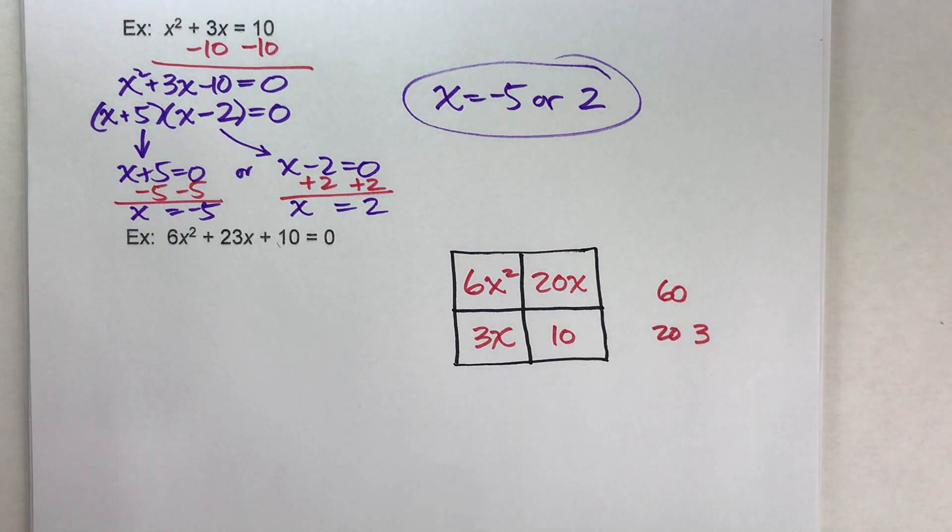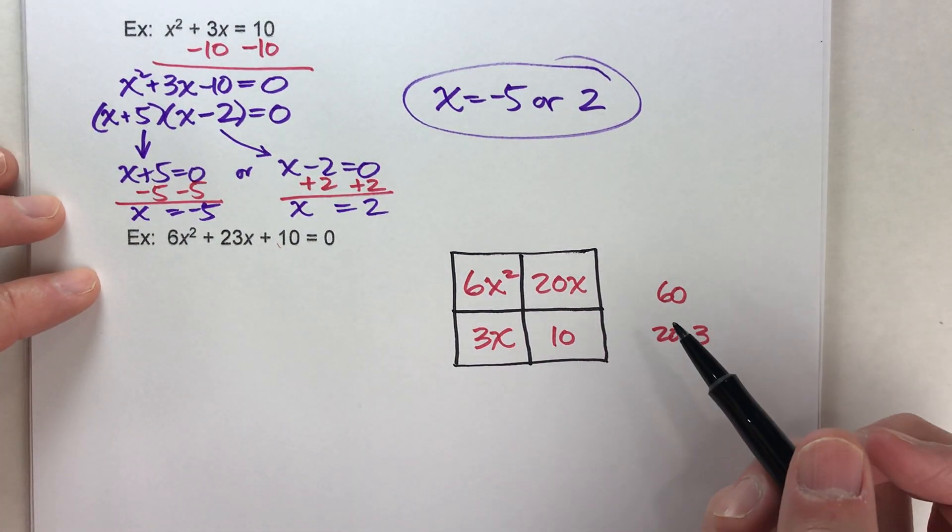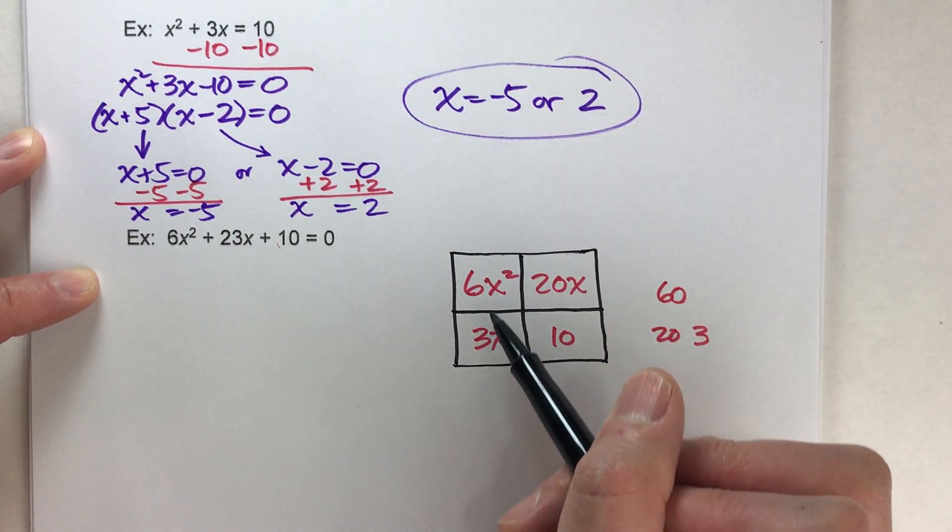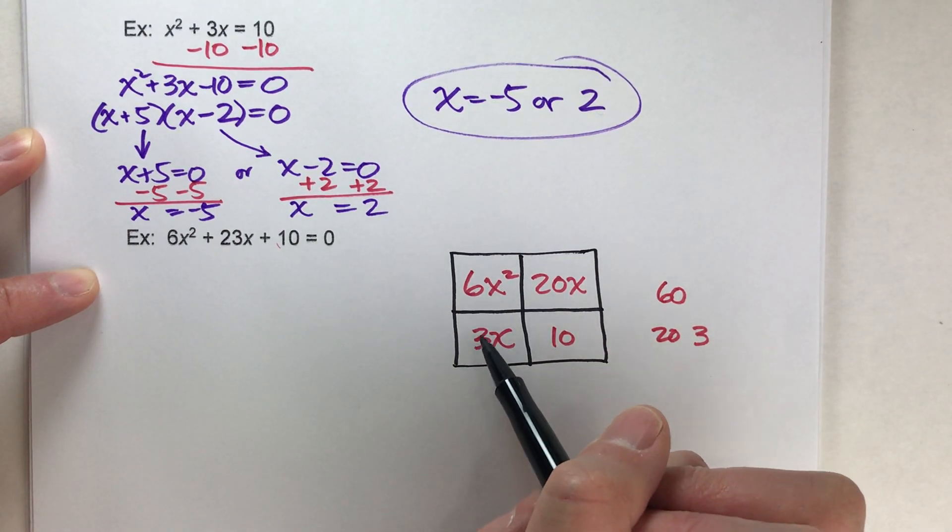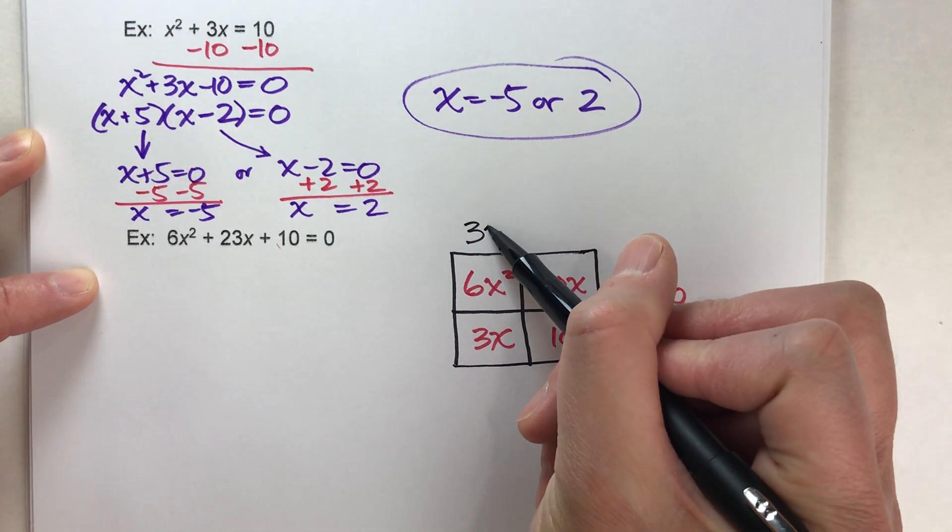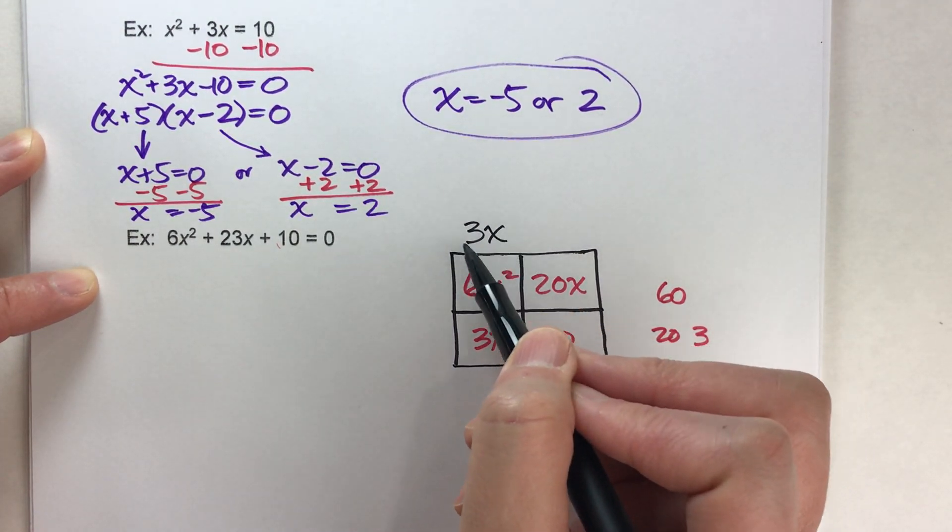This area model helps us factor because now I just have to figure out what times what gets me all these boxes. In this first column, my greatest common factor of 6 and 3 is 3. The greatest common factor of x squared and x is x. So this has to be a 3x on top.